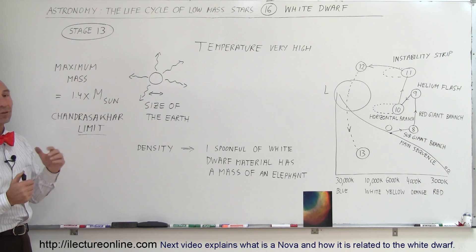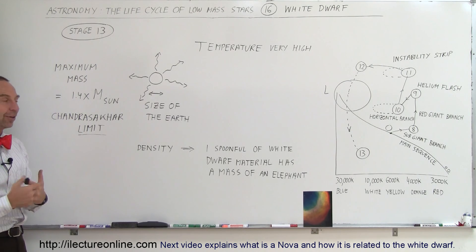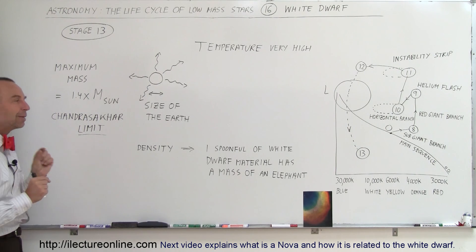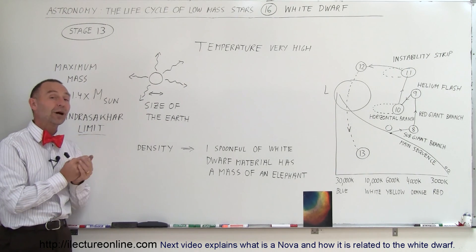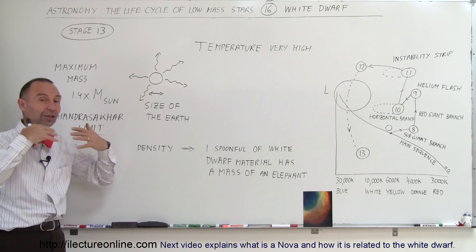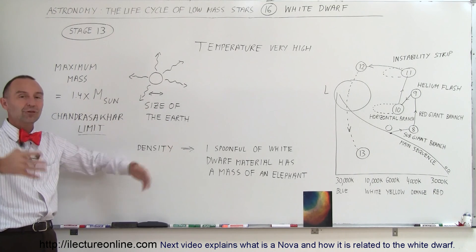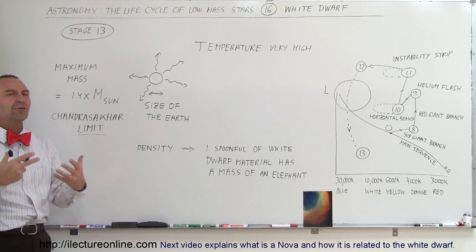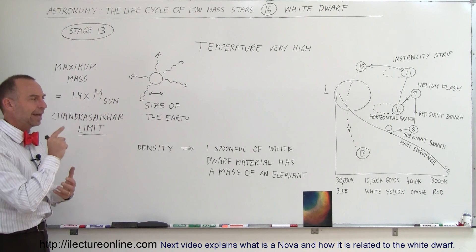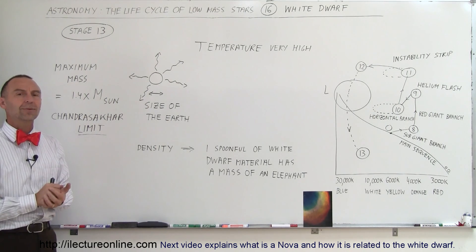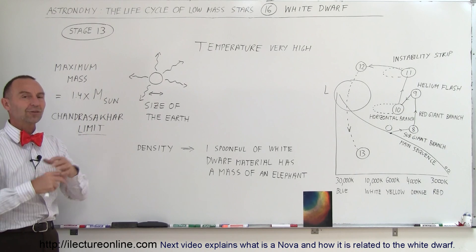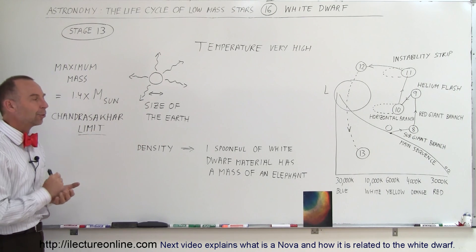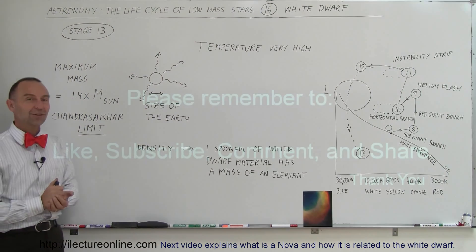That carbon material from white dwarfs cannot make it to the Earth on its own. There is something that happens to that very small percentage of really big stars that do not end up in a white dwarf stage — they somehow deposit all that carbon material into the universe to be reused and recycled in the formation of new stars and planetary systems like the Earth. That's where our carbon came from — from the center of those stars, recycled through a very explosive event that we'll talk about in a later video.